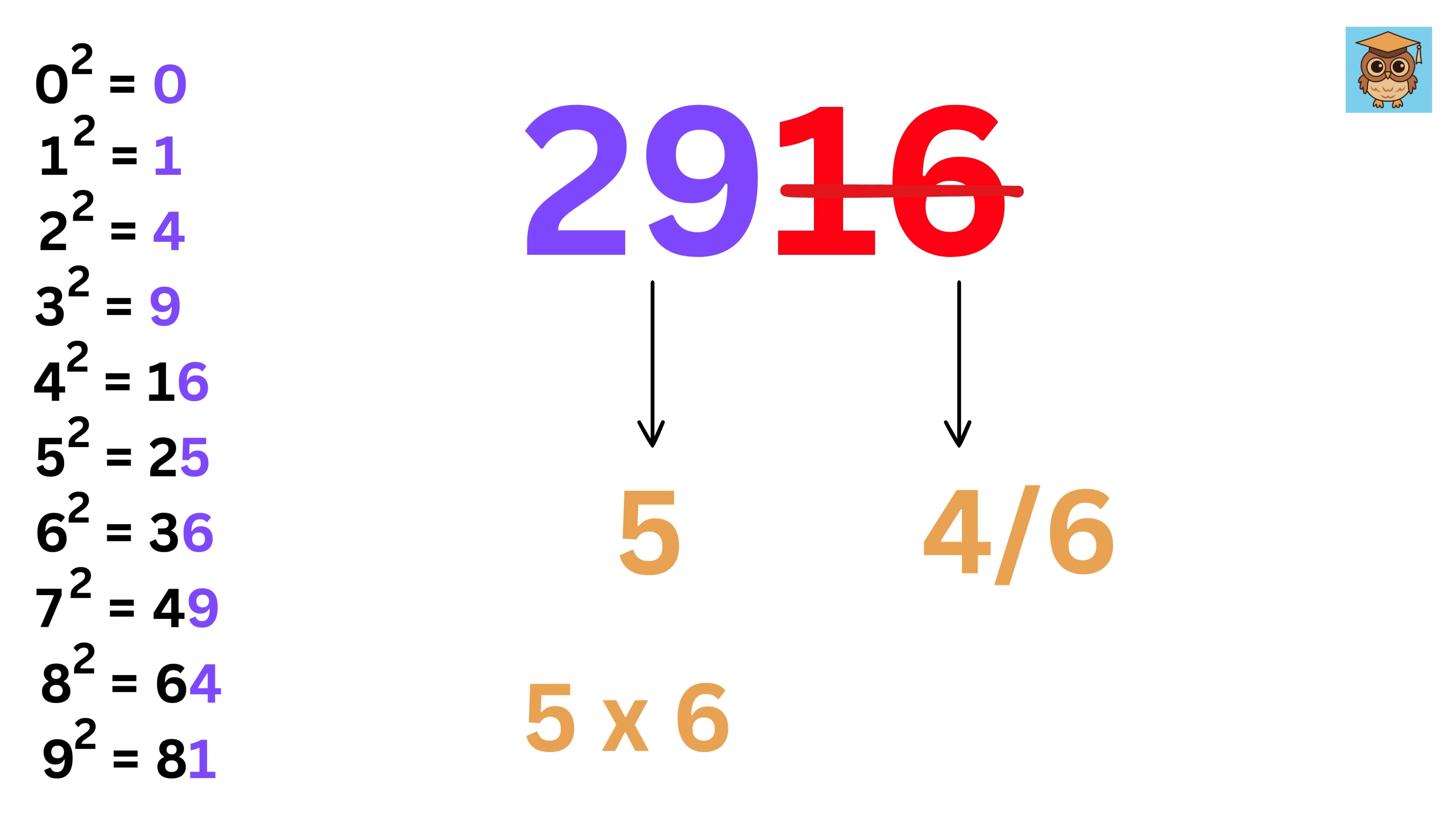Now, take this 5 and multiply it by the next number after it, which is 6 to get 30. Since 29 is less than 30, hence we choose this lesser number, or 4. Therefore, our answer is 54.